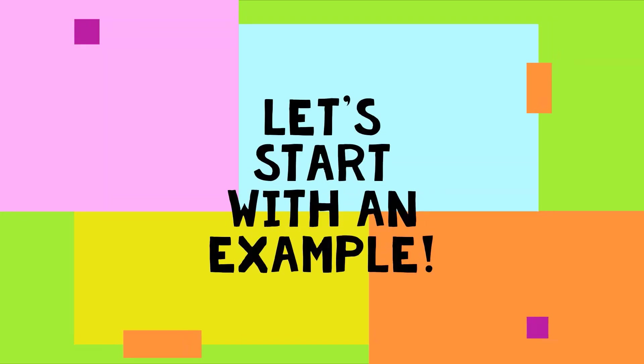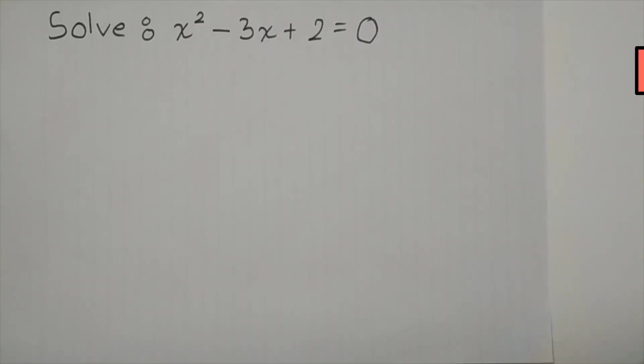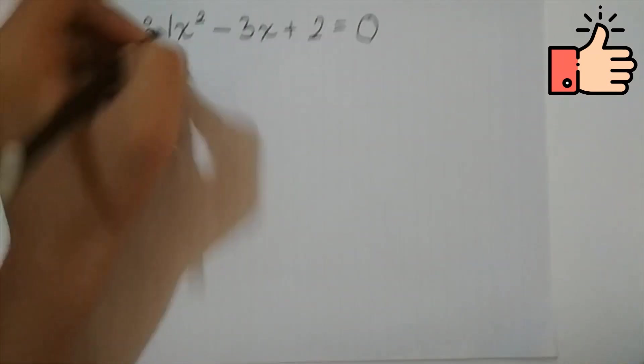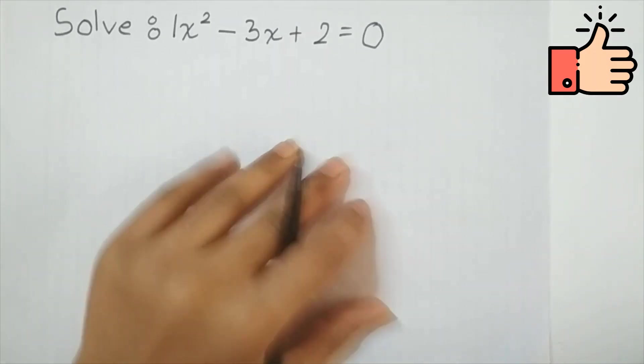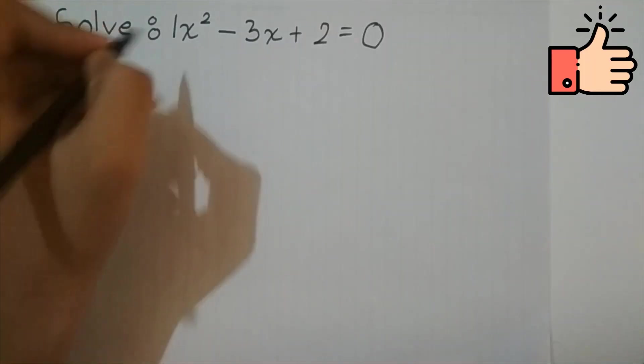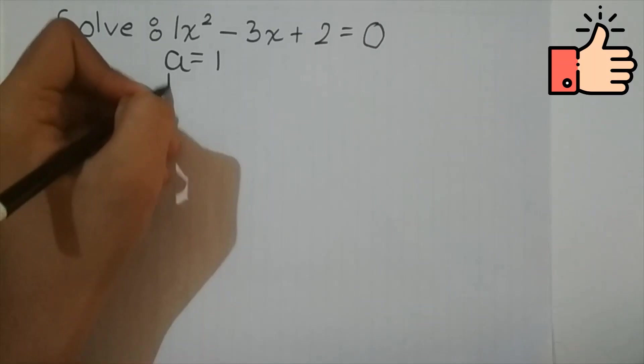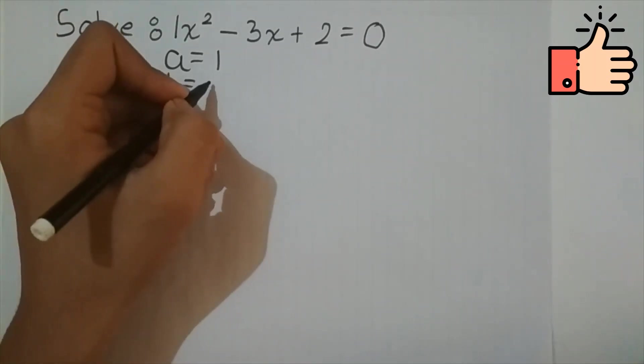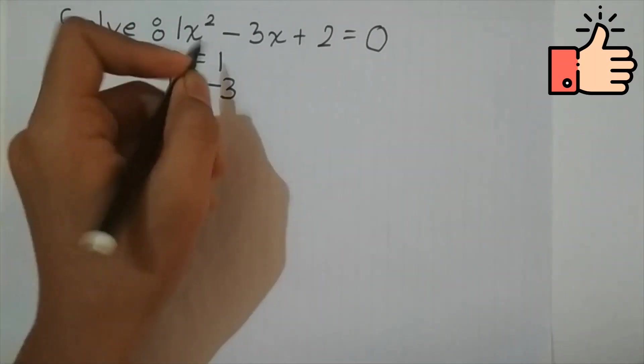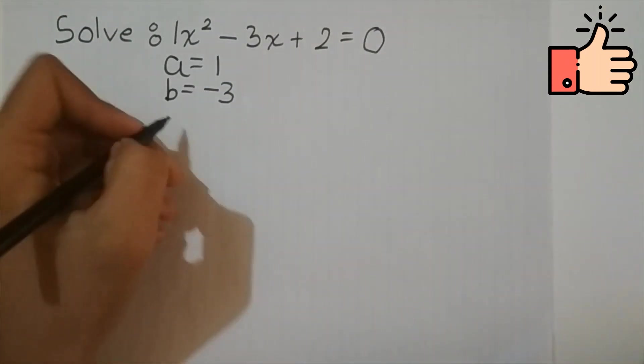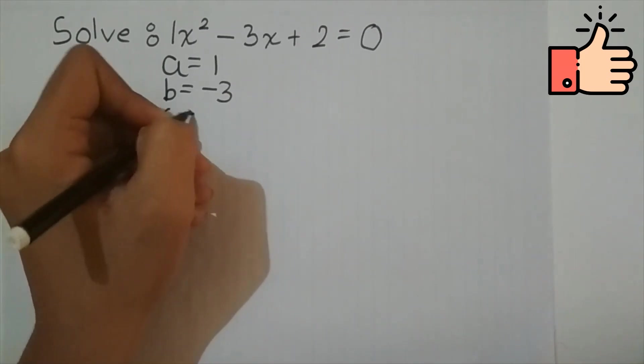Let's start with an example. Now we will apply the same logic here to solve this equation. So x squared is literally 1x squared and this is 2. So here a is equal to 1, b is equal to minus 3 because it is a negative, that is we are subtracting it, and c is equal to 2.